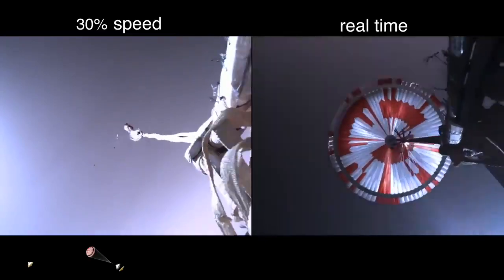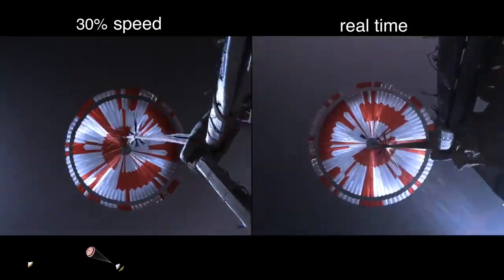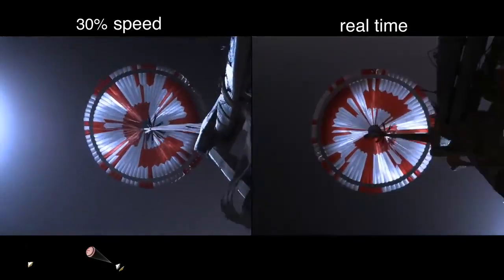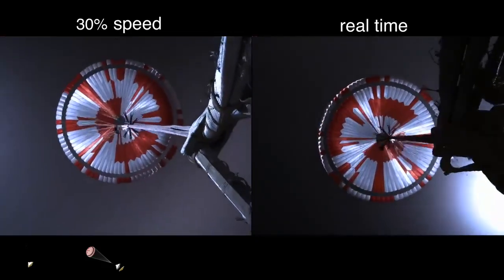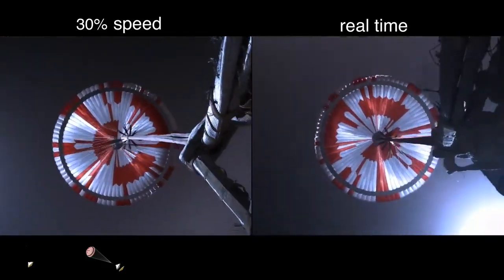Parachute deployed. Navigation has confirmed that the parachute has deployed, and we are seeing significant deceleration in the velocity. Our current velocity is 440 meters per second at an altitude of about 12 kilometers from the surface of Mars.